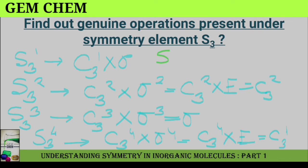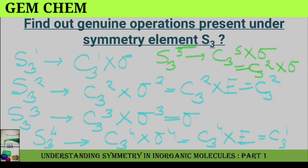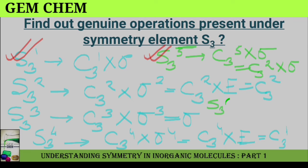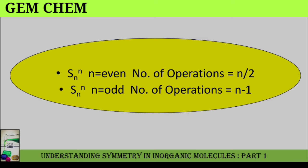S3⁵ equals C3⁵ into sigma⁵, which is equivalent to sigma, and this equals C3² into sigma — which is also a genuine operation. S3⁶ equals C3⁶ into sigma⁶, which equals E — not a genuine operation. So we conclude: when N is even, the number of genuine operations for Sn is N/2. When N is odd, the number of genuine operations is N minus 1.